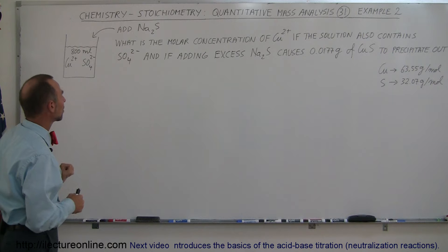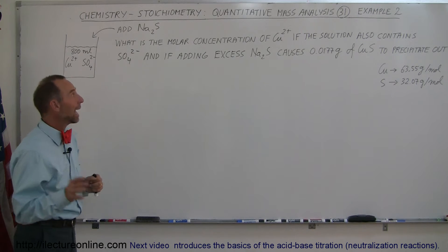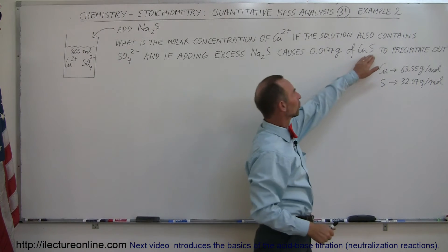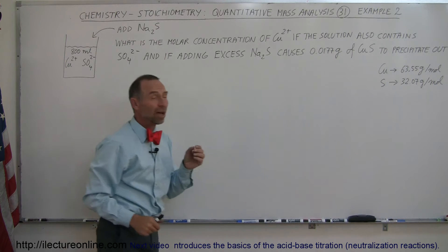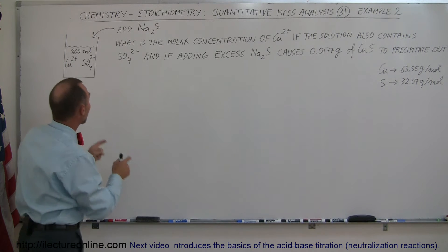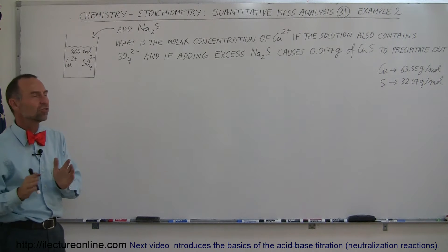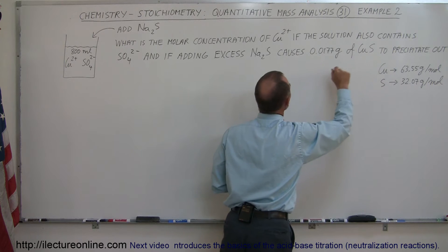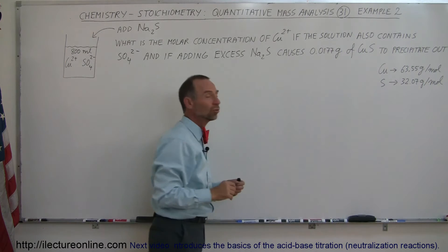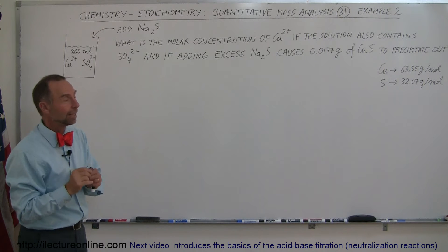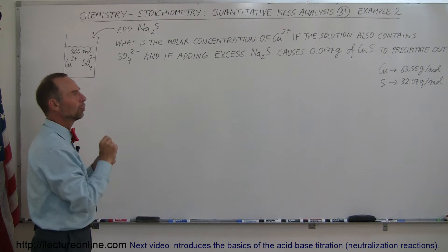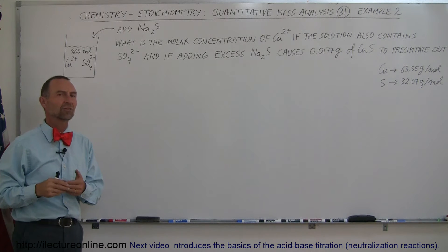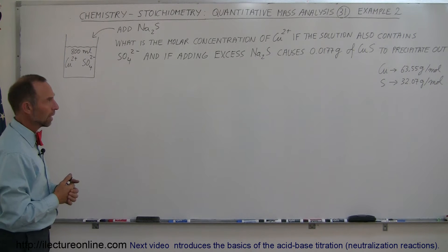We want to know the molar concentration of the copper ion. If we add an excess of sodium sulfide, we're going to precipitate out copper sulfide. When we precipitate out copper sulfide, we should be able to determine how much copper we had in the solution initially. The strategy is to first find the mass of copper in the precipitate, then figure out what percentage of that is copper, then figure out the number of moles of copper, and once we have the number of moles, we can find the concentration or molarity, because that's the number of moles per unit volume.